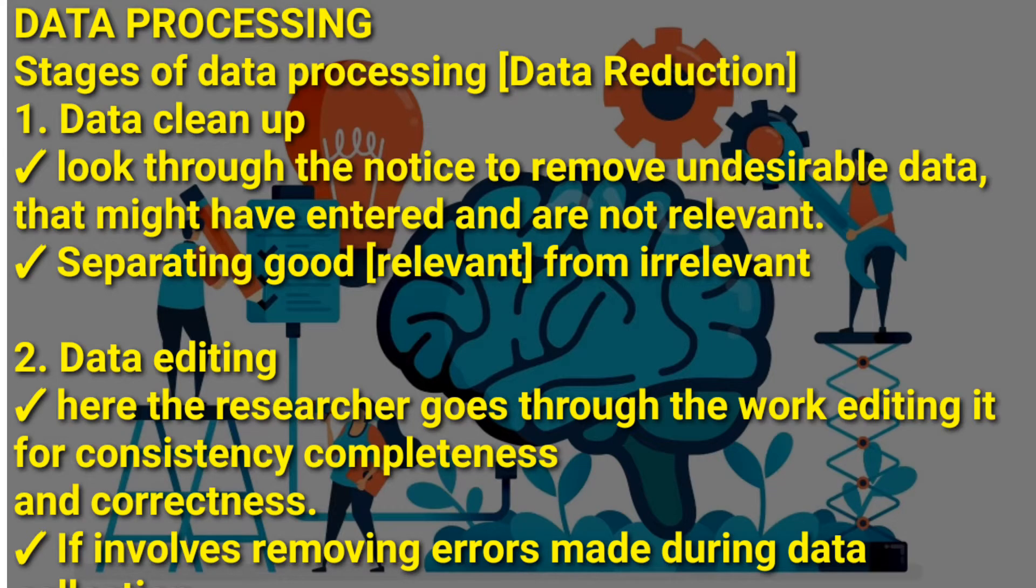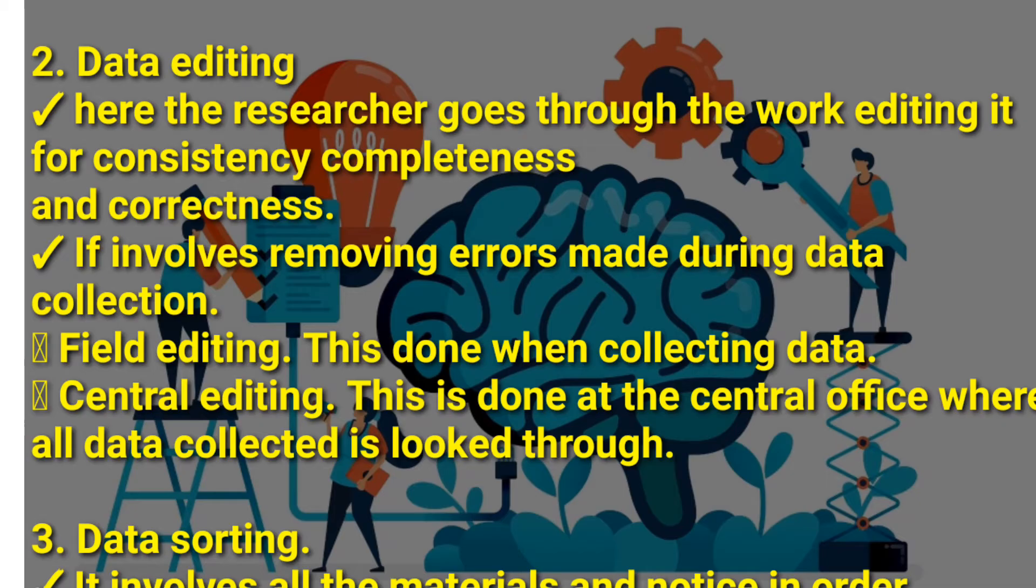The second stage in data processing is called data editing. After data cleanup, you edit the data. Here, the researcher goes through the work, editing it for consistency, completeness, and correctness to make sure the data is correct and complete. It involves removing errors made during data collection.